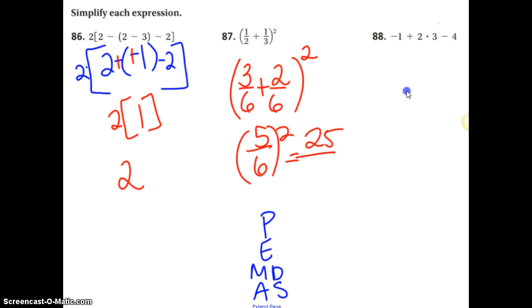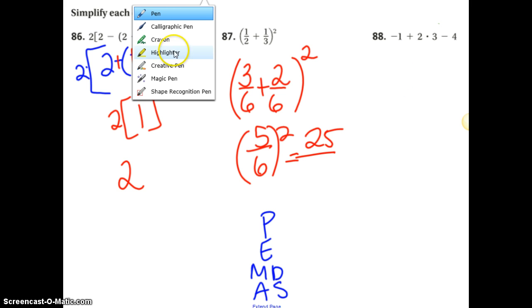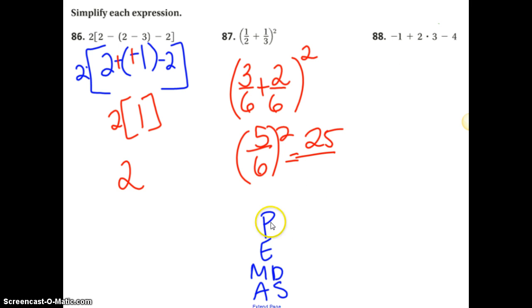88, last one. What do you do first? There's no parentheses, no exponents. Is there multiplication division? Yes. There it is. So you've got negative 1 plus 6 minus 4. Negative 1 plus 6 is 5 minus 4. 1.